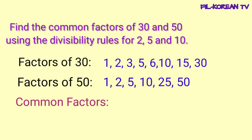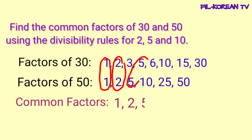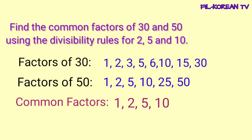Ngayon, kukuha na natin yung common factors ng 30 at 50. Titignan lang natin yung factors na pariho meron ang 30 at 50. Ang common factors ng 30 at 50 ay 1, 2, 5, and 10. Ito yung numbers na pariho factors ng 30 at 50. Ang tawag natin dito ay common factors.